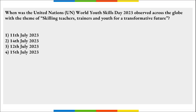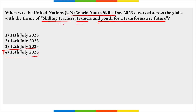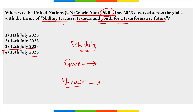UN World Youth Skills Day was observed on 15th July across the globe with the theme 'Skilling Teachers, Trainers and Youth for a Transformative Future.' The first ever edition of World Youth Skills Day was observed on 15th July 2015.